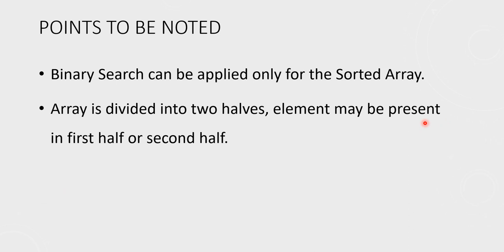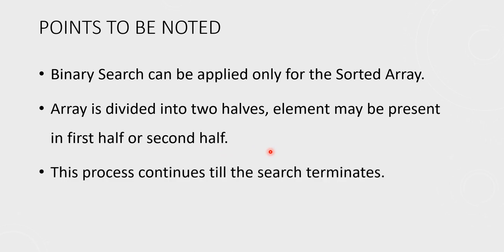The array is divided into two halves. The element may be present in the first half or the second half. Compared to linear search where you search elements in sequential order — literally going through all elements — in binary search, the element is checked from the middle point. Either the element is in the first half or the second half. If it is in the first half, you omit the second half, and vice versa, reducing the search space to the maximum level. This process continues till the search terminates when you find a match.